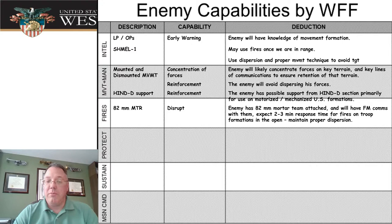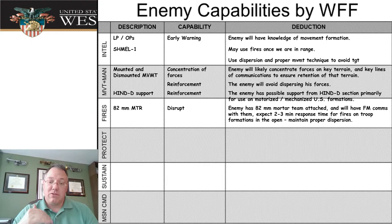For fires: they have an 82-millimeter mortar. The capability is they can disrupt our movement. The deduction — they've got FM comms to go with it, they need both those things and we think they have them, and we estimate a two-to-three minute response time for fires.